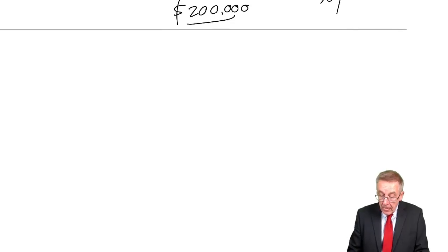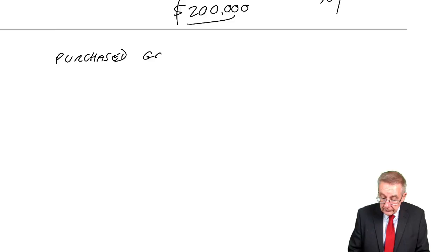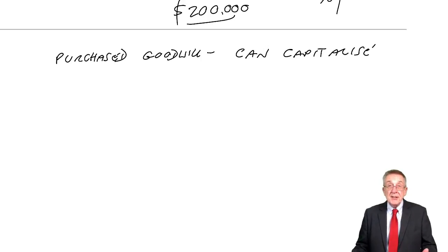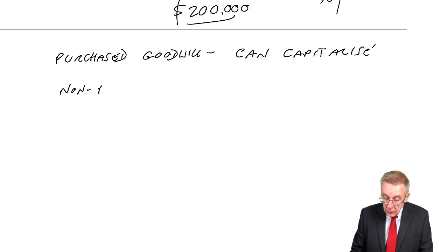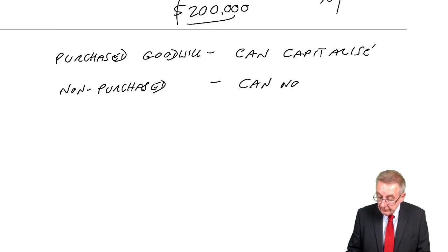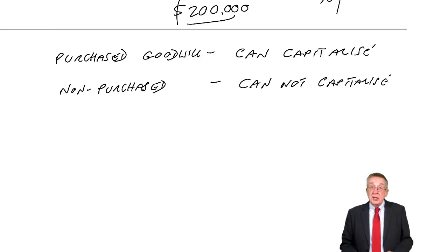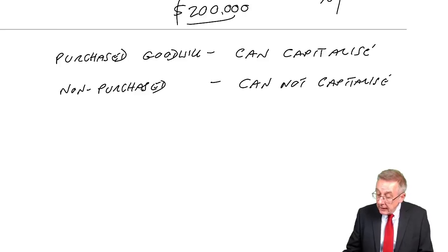Just to make sure you're with me: purchased goodwill — we can capitalise. It appears as a non-current asset on the statement of financial position. Non-purchased goodwill — the fact that I think my business is worth more, that there is goodwill — well, I haven't paid for it, so we can't show it. OK, that's enough there.